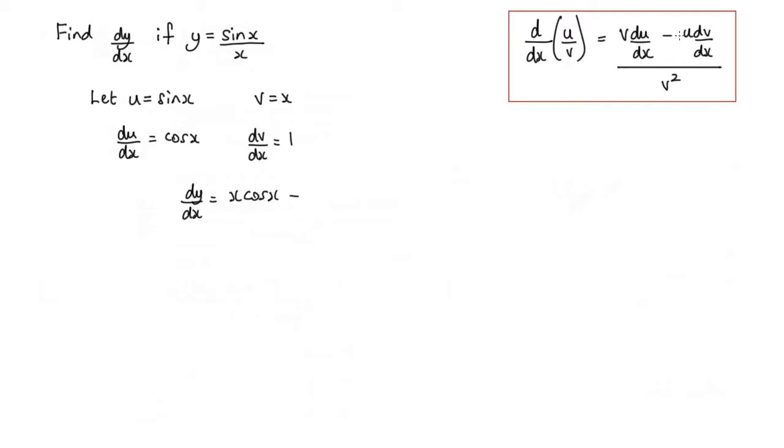Then we're going to subtract u times dv/dx, so these two multiplied, which will be simply sin x. Now that's all over v squared, and that would be x squared.